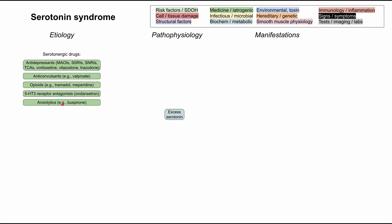Some anxiolytics like buspirone. NMDA receptor agonists like dextromethorphan have serotonergic activity. Serotonin receptor agonists like triptans and ritonavir — triptans, for instance, might be used for migraines, so it might be a patient taking medication for something completely unrelated to depression or mental health that can cause serotonin syndrome.